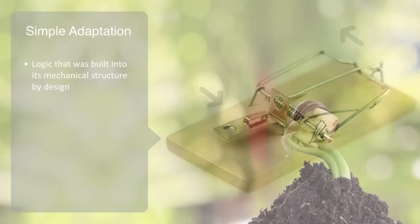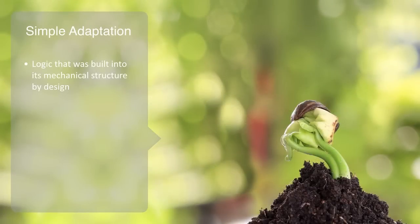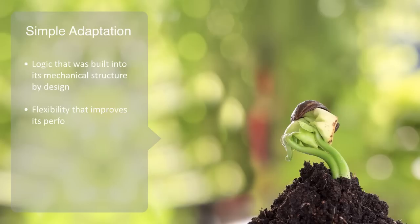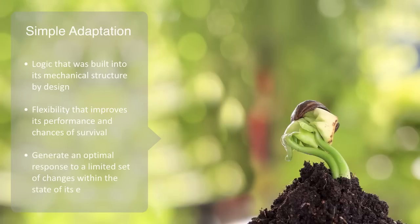The growth of a plant or fungus towards a source of light, what is called phototropism, is another example of adaptation. The cells on the plant that are farthest from the light release a chemical causing them to elongate and thus move the plant towards the light source. This adaptability gives the organism some flexibility that improves its performance and chances of survival. By flexibility, we simply mean it can generate an optimal response to a limited set of changes within the state of its environment.